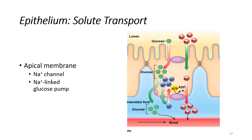On the apical surface of the cell, we have sodium leak channels allowing sodium to move according to its gradient. That is coupled to sodium-linked glucose pumps, which borrow that energy to move glucose against its concentration gradient. This is secondary active transport. These are actual examples of different transport types facilitated by carriers embedded in the apical and basolateral membranes of the epithelial cell.